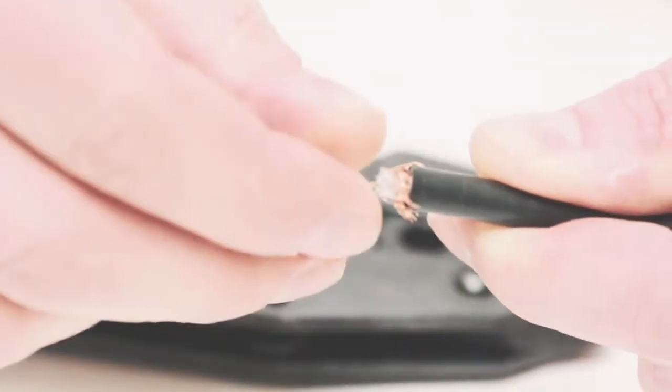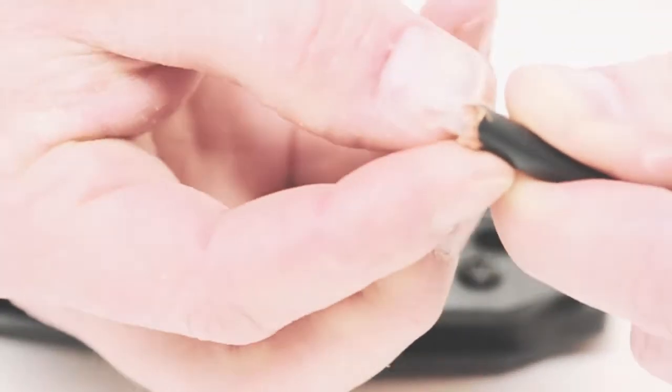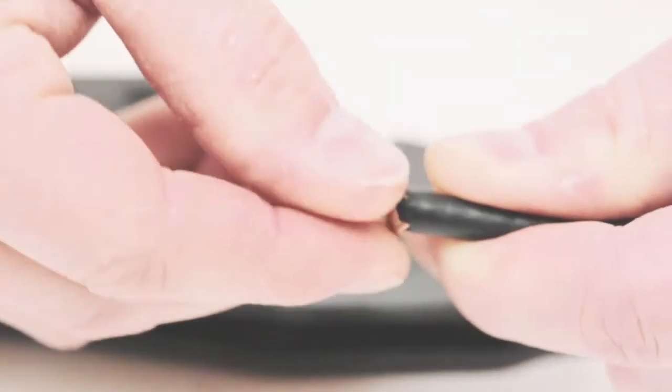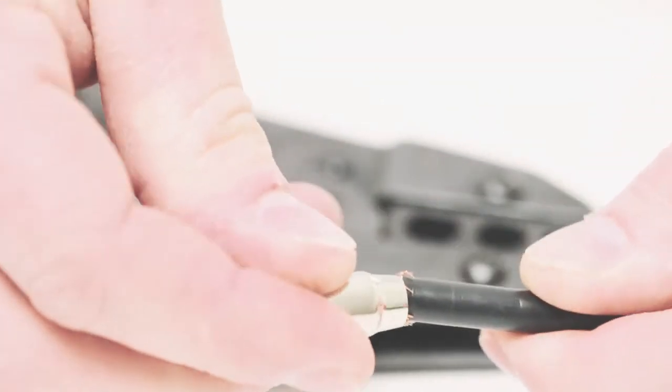Then take the foil braid and push it back flat against the jacket. Take the ferrule and slide it over the braid and the jacket.